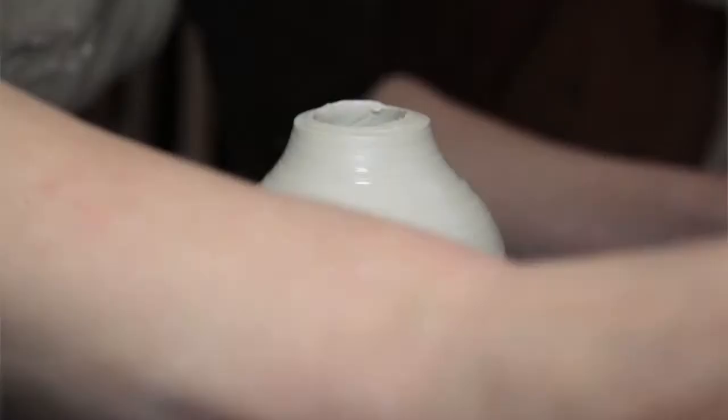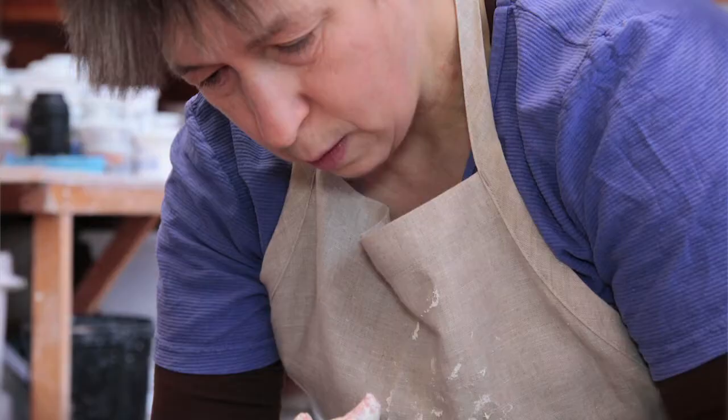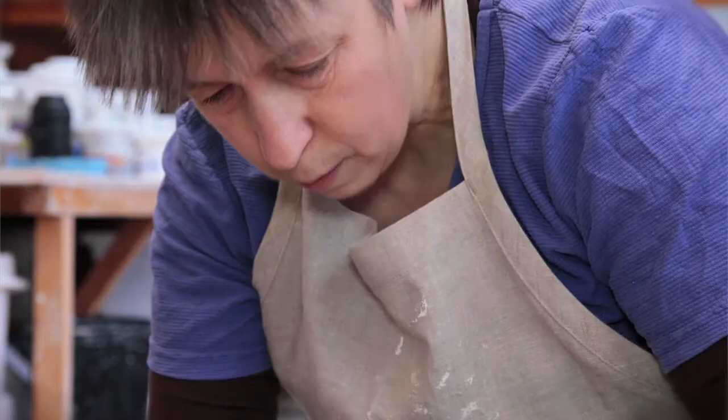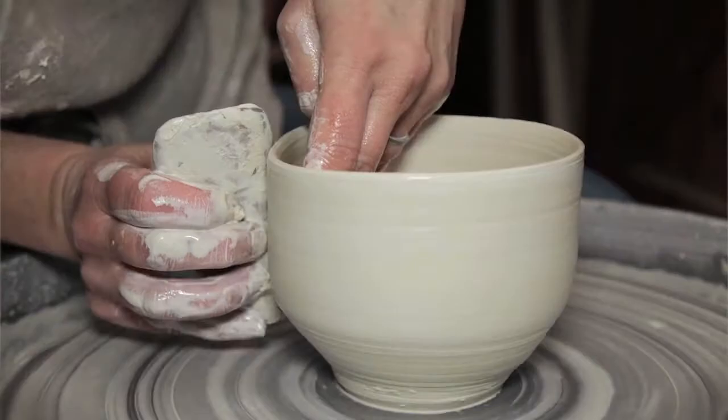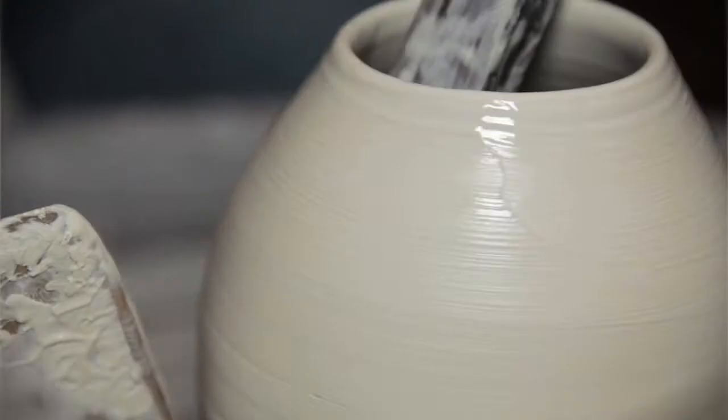I like to show the hand of the maker in the finished work. So I'll leave throwing lines, I'll put dimples in just so that people can see that somebody's made it by hand. I like to make a family of pots that are all almost the same but you can tell that they're handmade because each one is unique.